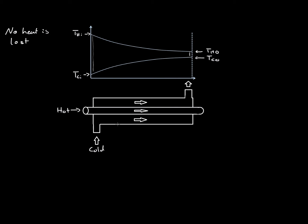So how can we calculate the heat loss from the hot water? It is Q̇ = ṁ_H · C_PH · (T_H,in − T_H,out). The same is true for the cold water: Q̇ = ṁ_C · C_PC · (T_C,out − T_C,in). Note the order is reversed so that Q has the same positive value for both, and these values are equal.